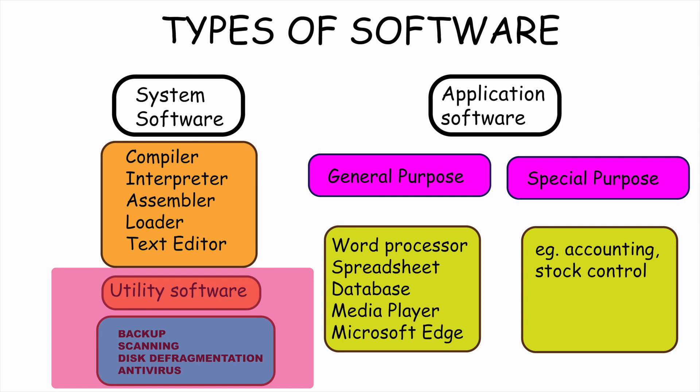Assembler: An assembler is a translator that converts a program written in assembly language into machine code that a computer can understand. Loader: A system software that is used to transfer a program from secondary storage devices to the primary memory of the computer.